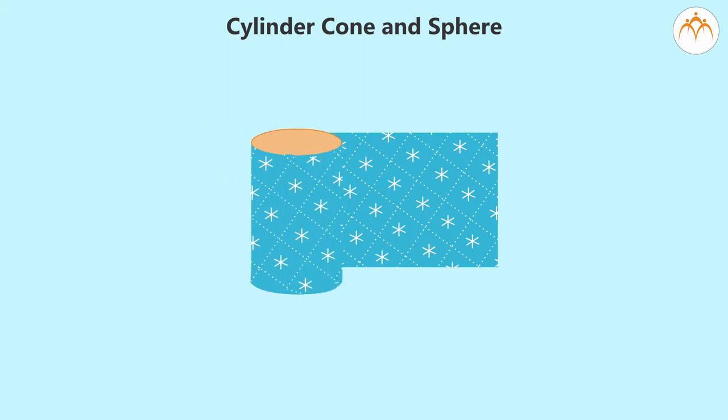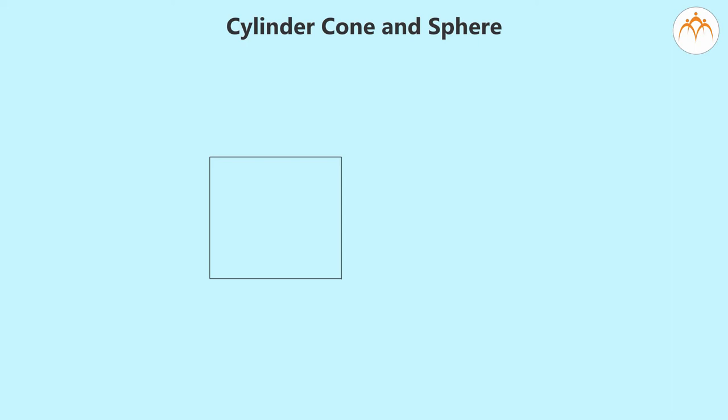When you have covered the curved surface, exactly stop. Mark the paper where you stop. On the paper, you can draw a rectangle which has exactly the same area as the curved surface. The width is the height of the cylinder. The edge of the paper moves along the circumference of the circular edge on the top and bottom of the cylinder.